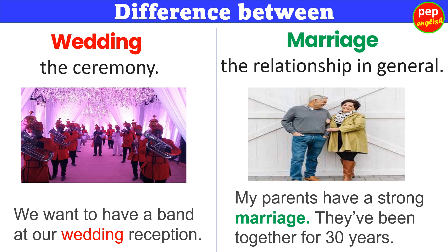Difference between wedding and marriage. Wedding refers to the ceremony. Example: We want to have a band at our wedding reception. Marriage refers to the relationship in general. Example: My parents have a strong marriage — they've been together for 30 years.